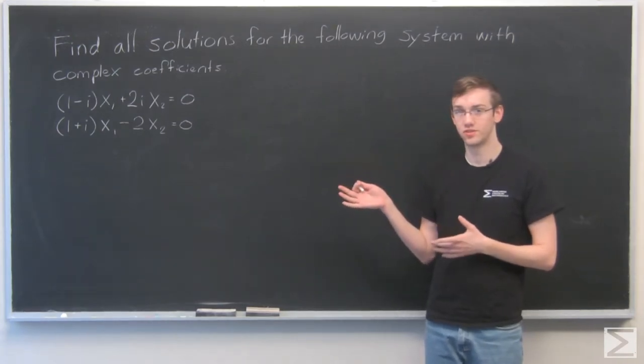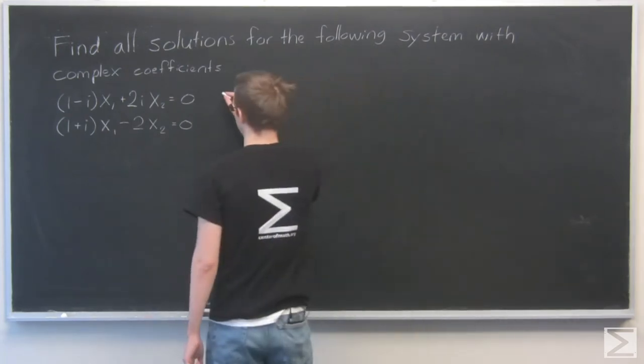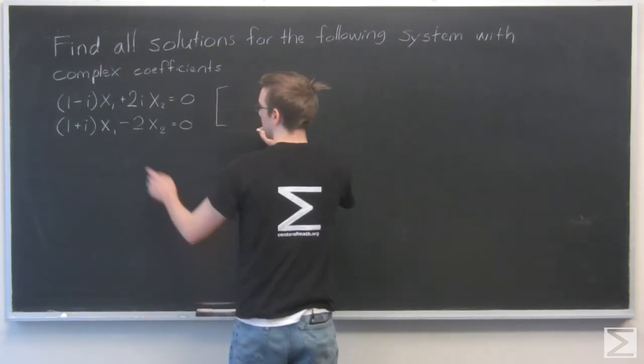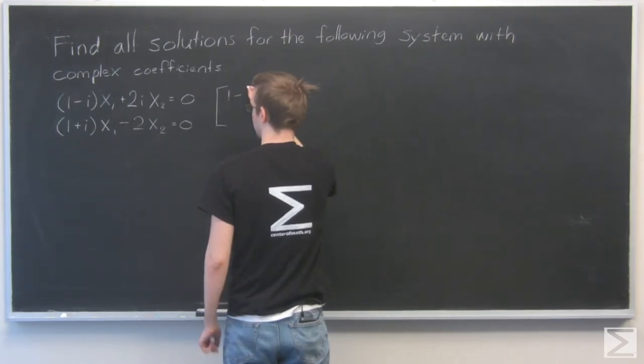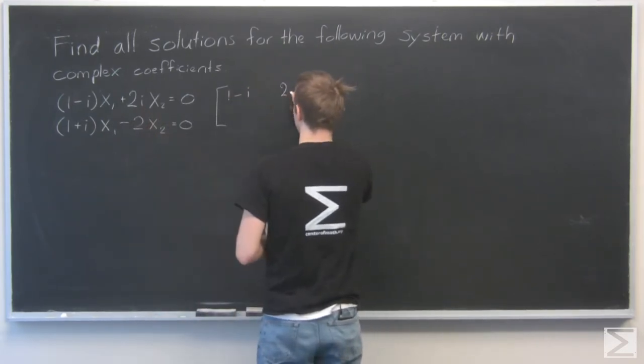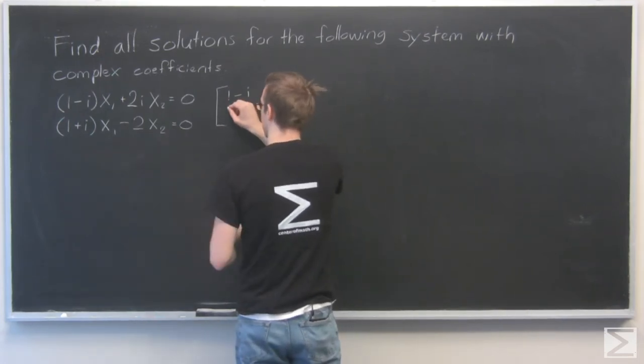We're going to take the coefficients for this system and put them into a coefficient matrix. This is 1 minus i times x1, so 1 minus i. This is 2i. Here's 1 plus i, and that's minus 2.